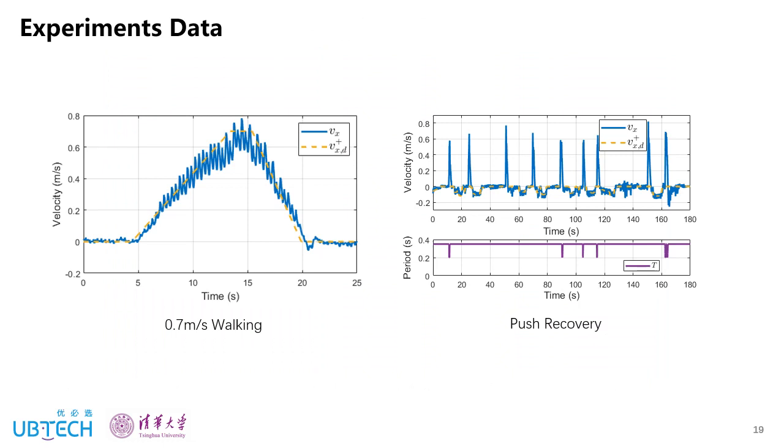Here are the experiment data of walking and push recovery experiments. We can see that the robot can follow the velocity command fairly accurately. And during the push recovery, the instant speed change is up to 0.8 meter per second.